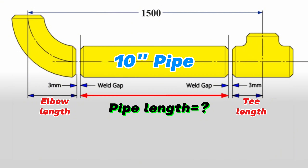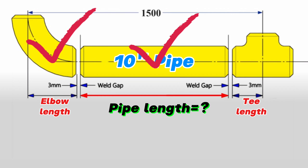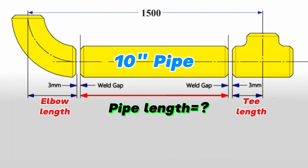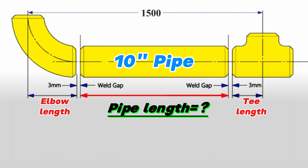As you can see, this is a 10-inch pipeline section. This pipe section consists of a 10-inch 90-degree butt weld elbow, a 10-inch pipe piece, and a 10-inch butt weld equal tee. In this pipe drawing, 1500 millimeters from the center of the 90-degree butt weld elbow to the center of the equal tee is shown. We are required to calculate the length of this 10-inch pipe piece used between the butt weld elbow and equal tee in this pipeline.